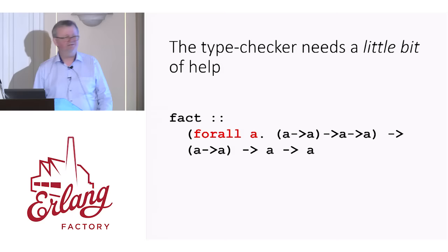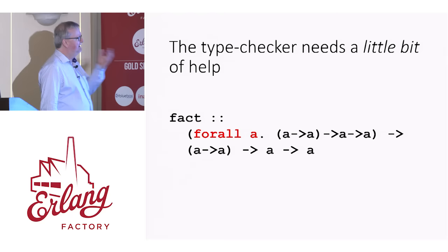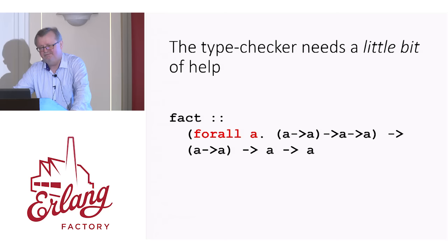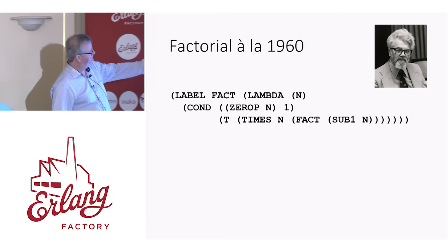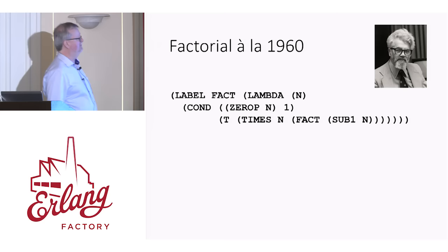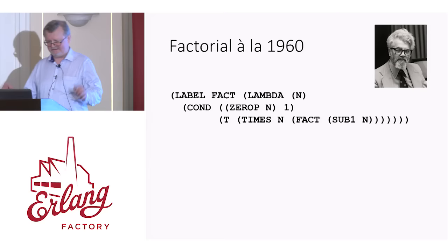So this was functional programming in the 40s. Alonzo Church could have a lot of fun writing functional programs, but he couldn't actually run them — it was a bit of a bummer. That wasn't possible until 1960, when John McCarthy implemented the first version of Lisp. Here's the factorial function in Lisp — it looks jolly similar. Label means it's a recursive function, and we've got lambda n, and then cond is if-then-else in Lisp. Looks quite familiar, apart from all the lovely parentheses.